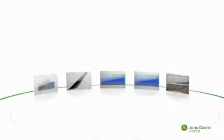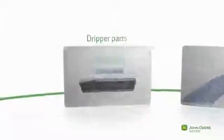The John Deere D5000 flow regulated drip line is designed for reliability and high performance. Take a journey inside the dripper and discover how it works.